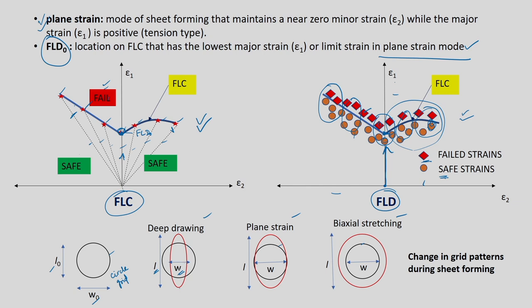In the deep drawing case, if you calculate strain along direction 2, it will be negative. In plane strain mode, the dimension in direction 2 remains almost the same, so epsilon 2 is zero, but there will be some strain in direction 1. In biaxial stretching, the circle becomes a larger circle and you can get strains from W, L and W0, L0 — resulting in positive strains on both sides. FLC, FLD, biaxial, deep drawing, plane strain modes, and FLD0 are all standard terms used with the forming limit curve.